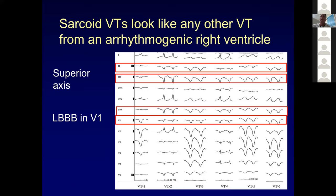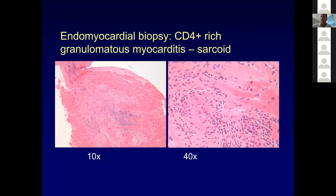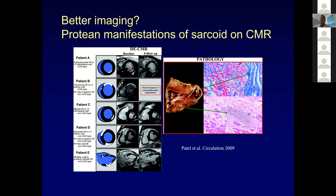Sarcoid VT can look like any other VT from an arrhythmogenic right ventricle — these weird left bundle VTs. We've got more advanced imaging here — a PET scan. PET imaging shows perfusion imaging on top and FDG uptake on the bottom. You see perfusion defects on the septum, then a dark area on the mid to basal septum with FDG uptake — consistent with, certainly suggestive of, sarcoid. In this case, biopsy confirmed granulomatous findings consistent with sarcoid. We got lucky, but can we use better imaging to identify these people?